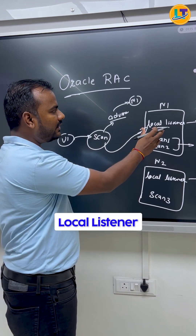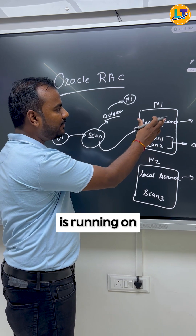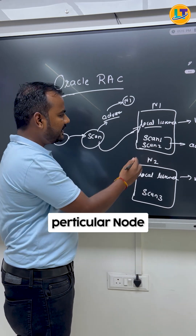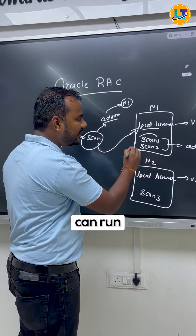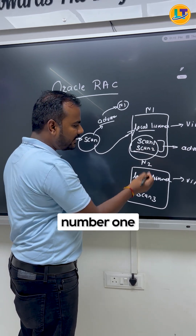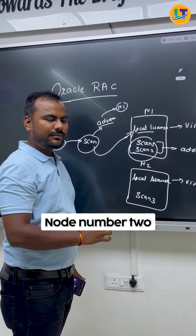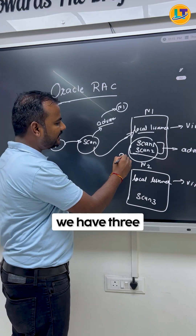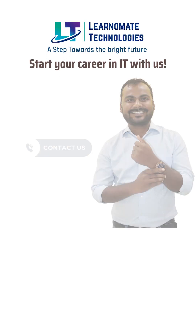So this is the difference between scan listener and local listener. The local listener is running on a particular node, whereas the SCAN can run from node number one or node number two. Basically, we have three SCAN instances out there.